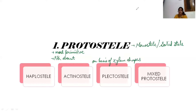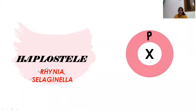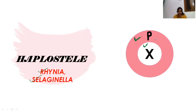The first type of protostele is haplostele, and the examples are Rhynia and Selaginella. Haplostele is the most primitive, simplest type of stele. In this, phloem is present on the outer side in a ring form and solid xylem is present on the inner side — both present in the form of a ring. No pith formation is there.